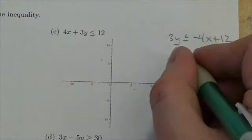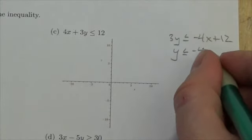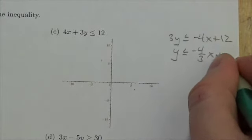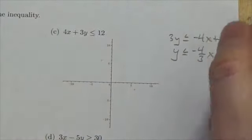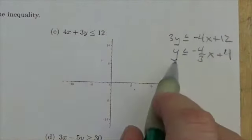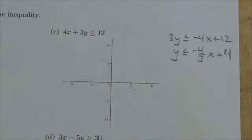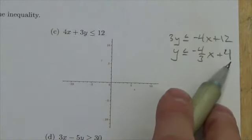Then I'll divide by 3, and I'm dividing by positive 3 so that I don't change the direction of the sign. So that stays: y is less than or equal to negative 4 thirds x plus 4.